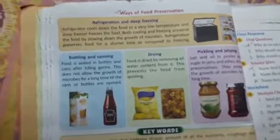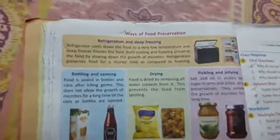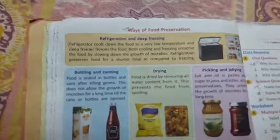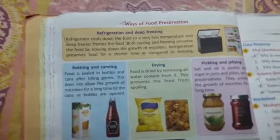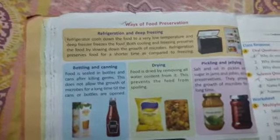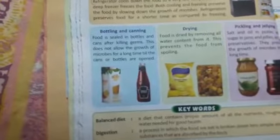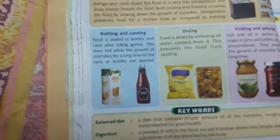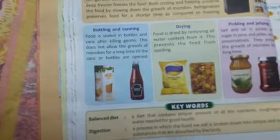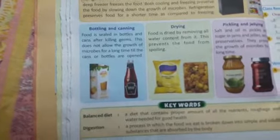In refrigeration and deep freezing, the refrigerator cools down the food to a very low temperature, and the deep freezer freezes the food. In bottling and canning, food is sealed in bottles and cans after killing the germs. This does not allow the growth of microbes for a long time until the cans or bottles are opened.